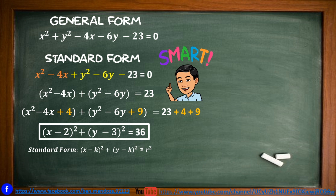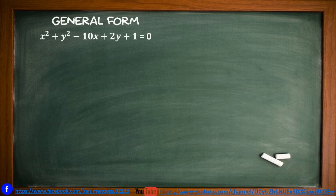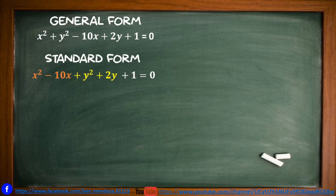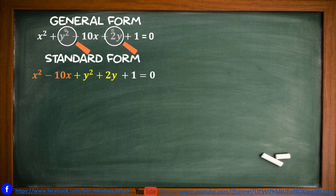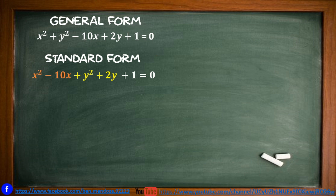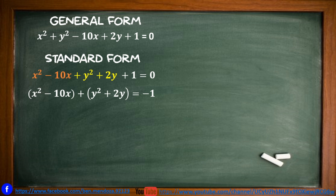Example 4: given the general form x squared plus y squared minus 10x plus 2y plus 1 equals 0. First, group the terms: x squared minus 10x, and y squared plus 2y, with constant plus 1 equal to 0. Then isolate the constant to the right side, giving x squared minus 10x plus y squared plus 2y equals negative 1.